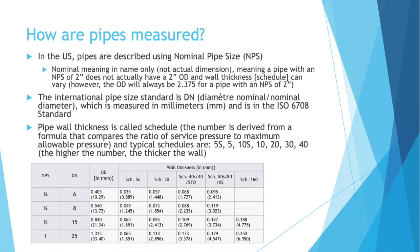How are pipes measured? When purchasing pipes or talking about pipe design, in the US pipes are described using the nominal pipe size measurement, NPS. Nominal means in name only, so it's not the actual dimension. A pipe with an NPS of 2 inches does not actually have a 2-inch OD, and wall thickness — called the schedule — can vary. However, the OD will always be 2.375 inches for a pipe with an NPS of 2 inches. The international pipe size standard is DN, nominal diameter, measured in millimeters, and is in the ISO 6708 standard.